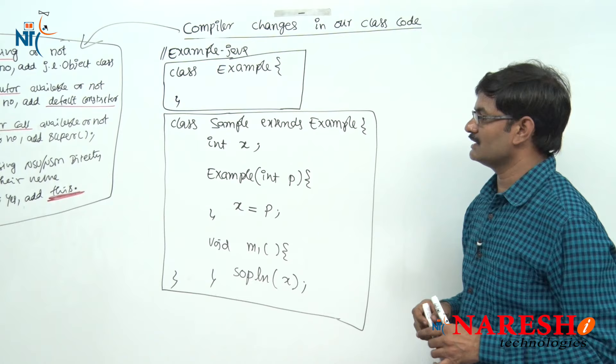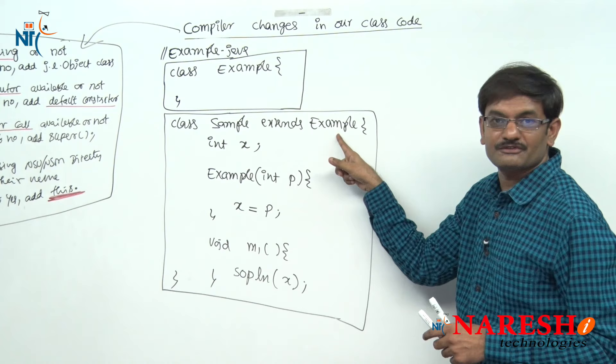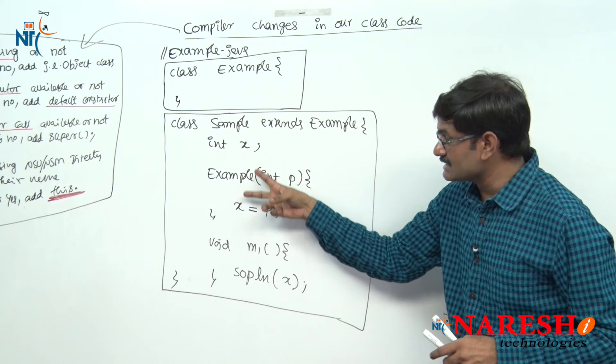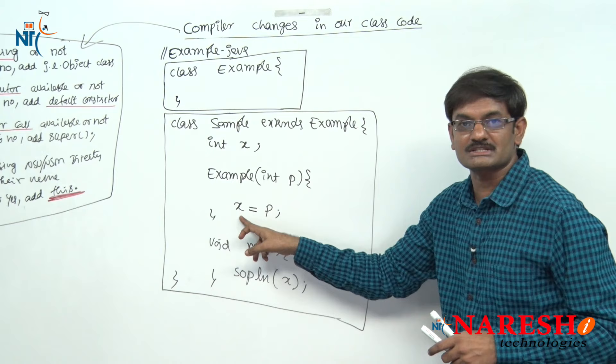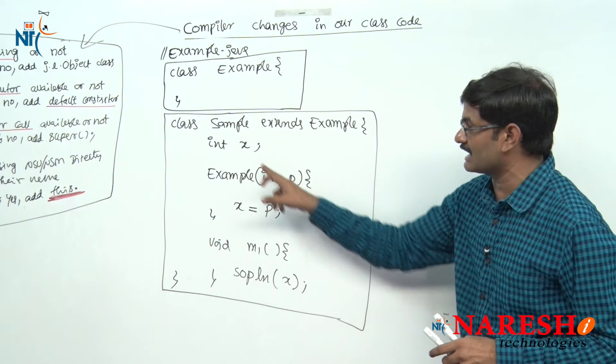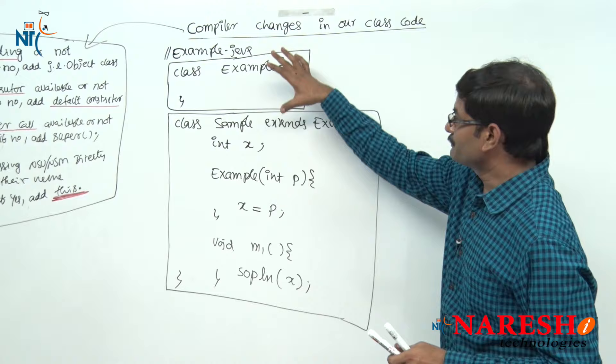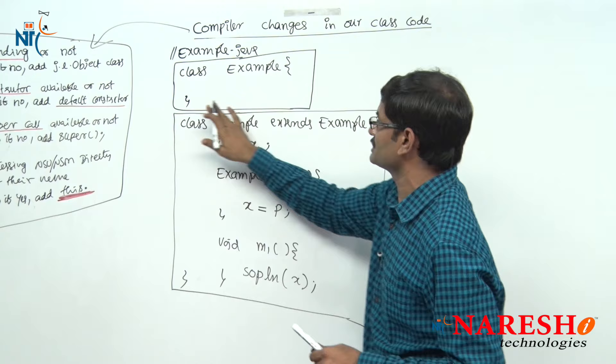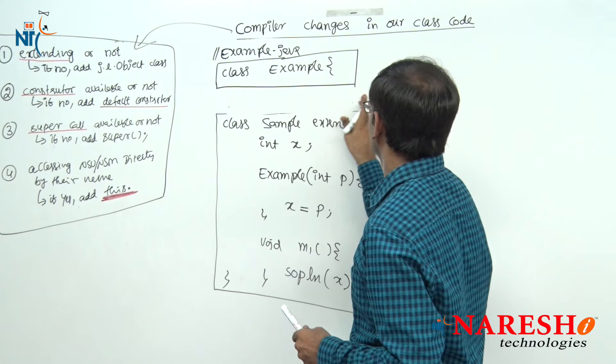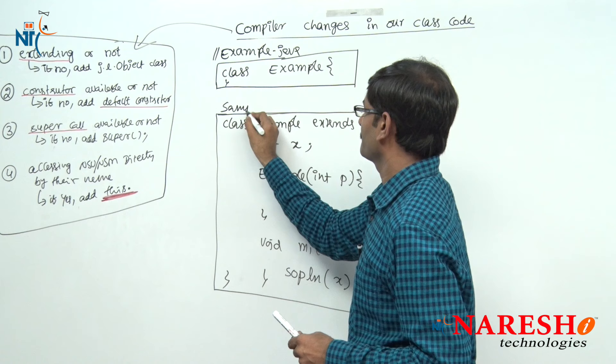Class Sample extends Example with int x — one non-static variable. Sample class is already extending from Example class. Sample class has its own constructor. Inside the constructor, I am accessing non-static variable. I have also created a method, and inside the method again I am accessing the non-static variable. Now these are in two files: example.java and sample.java.